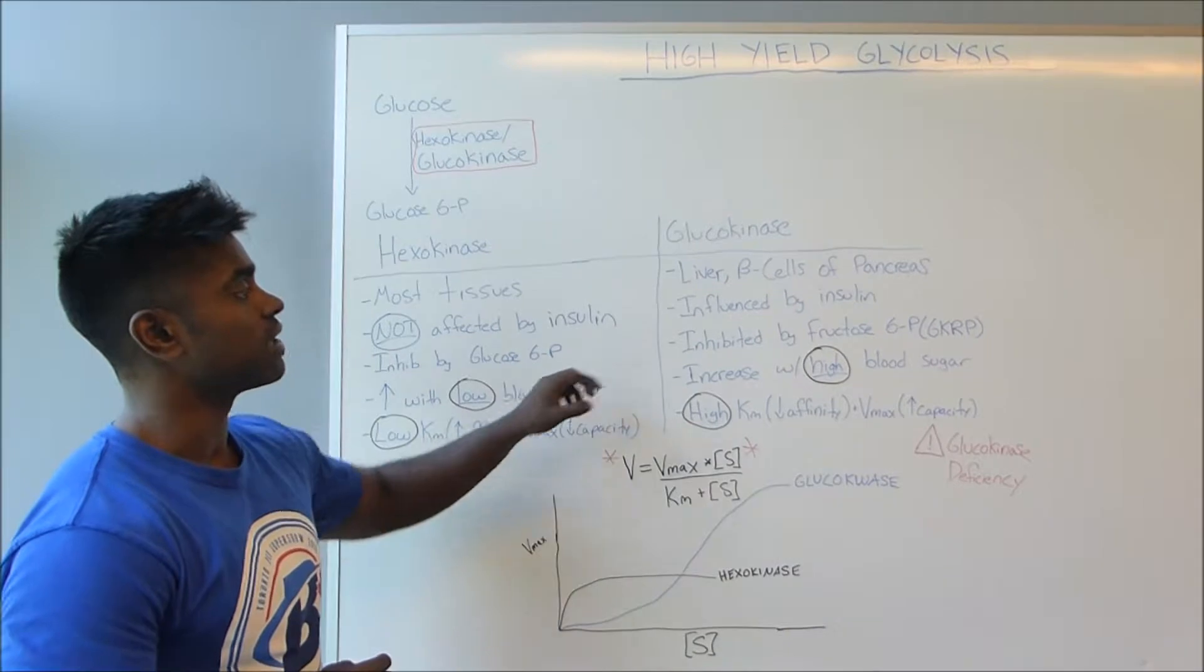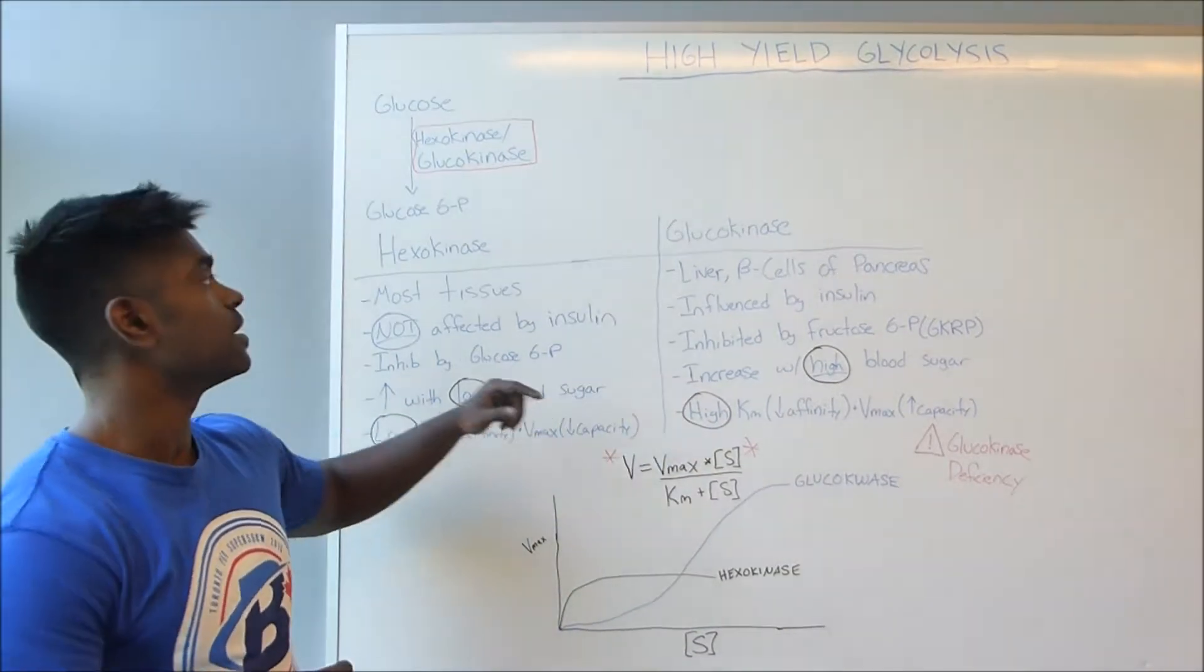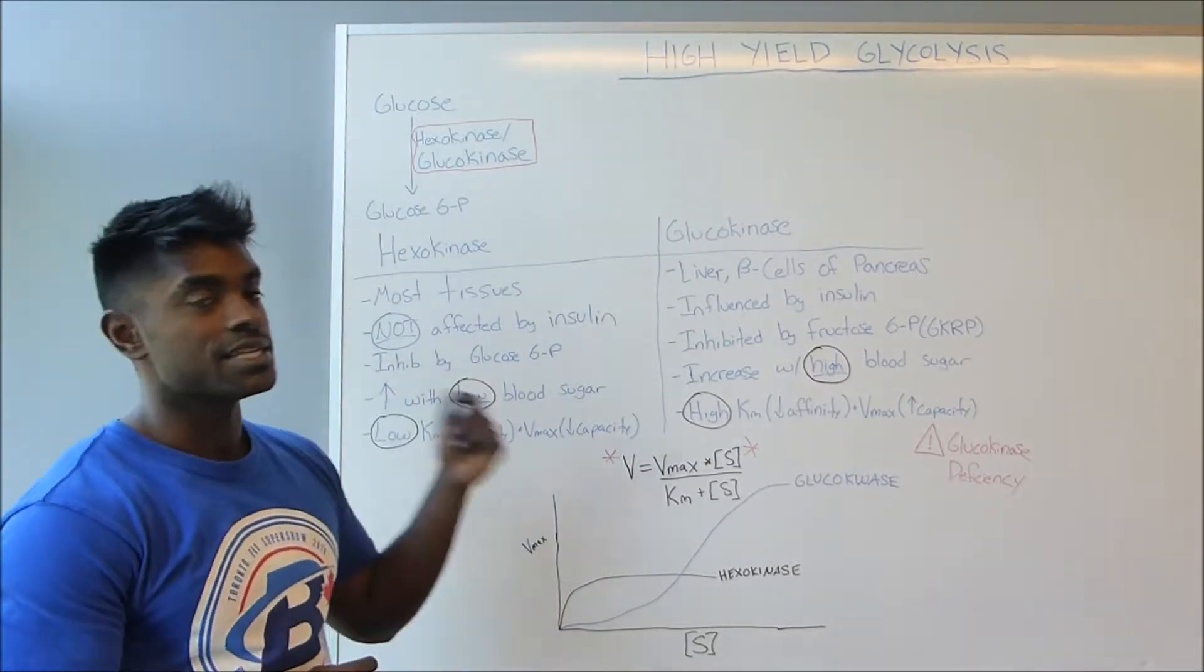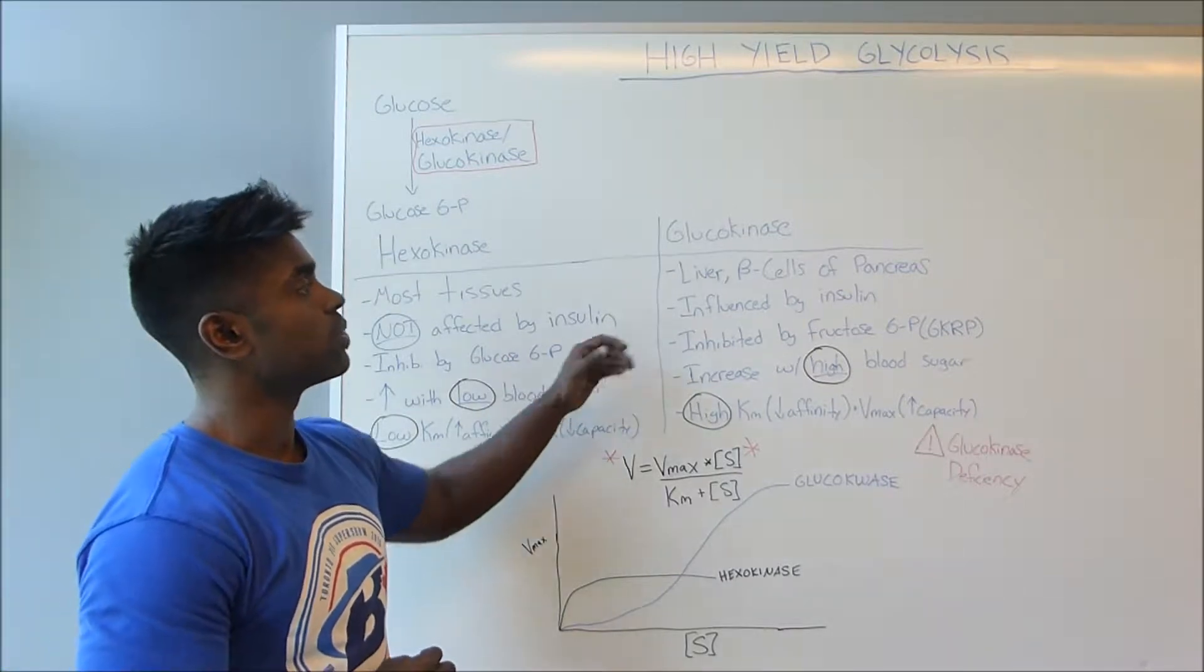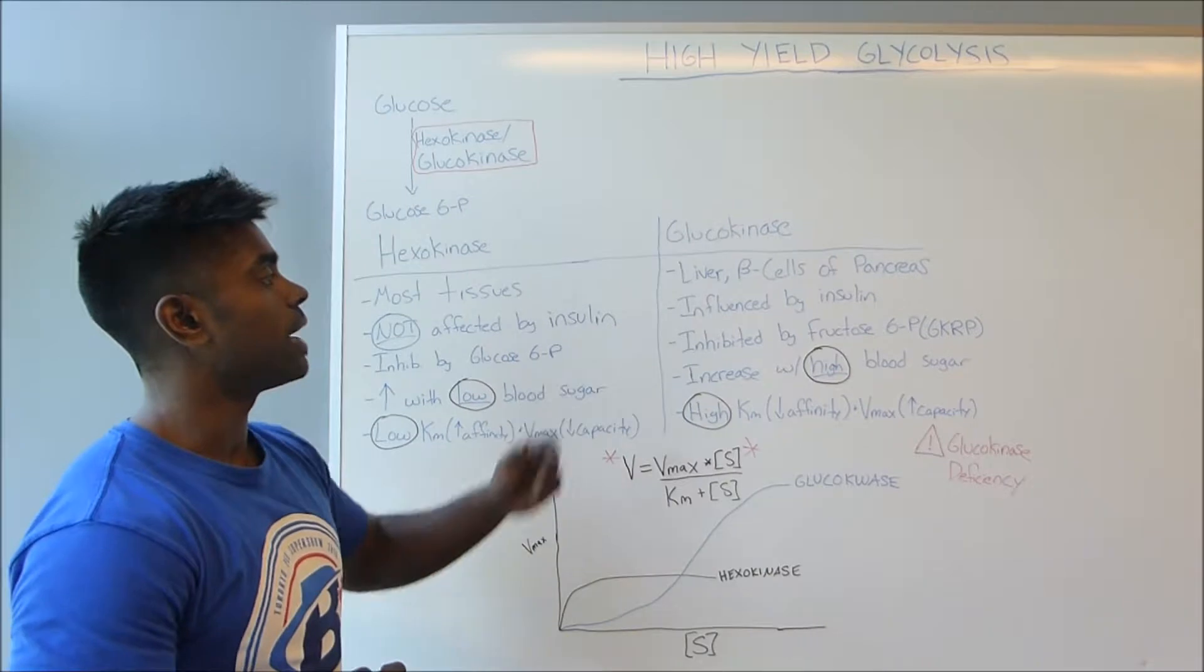However, we see that in glucokinase it is actually inhibited by fructose 6-phosphate, which is one step downstream of glucose 6-phosphate, and this is because we actually do want to uptake more glucose within these cells. That's why it's not going to be directly inhibited by its product.